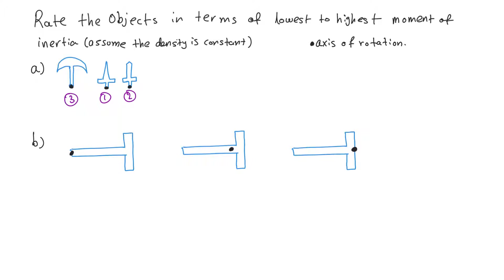For the second part of the example, we have the same three objects but with different axes of rotation. To estimate the moment of inertia, I'll divide each object into small equal sections and treat each piece as a point mass. On the long side of the T-shape I have about six point masses, and on the shorter side about five.